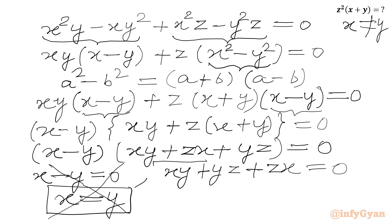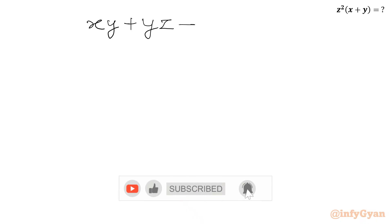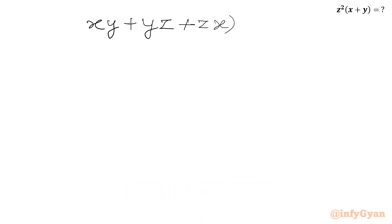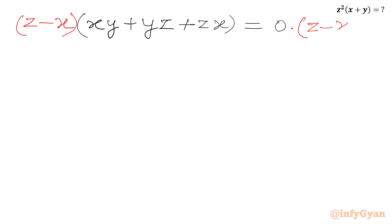So we have xy plus yz plus zx equal to 0. Now I will multiply both sides by z minus x, considering x cannot be equal to z.